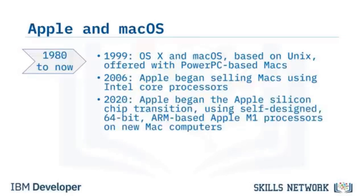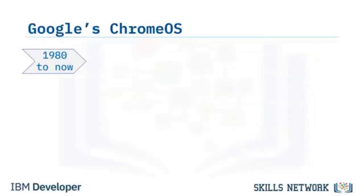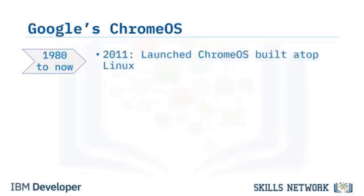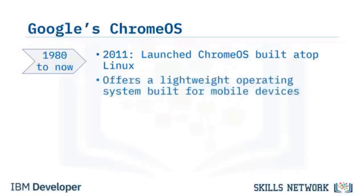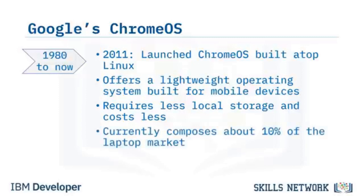In 2020, Apple began the Apple Silicon chip transition, using self-designed 64-bit ARM-based Apple M1 processors on new Mac computers. Apple also offers the iOS operating system for its tablet and smartphone devices. In 2011, Google debuted Chrome OS built atop Linux, offering a lightweight operating system for mobile devices including laptops, currently used by about 10% of the laptop market.